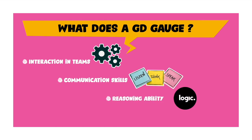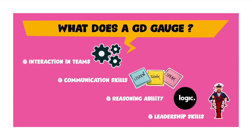The third thing a GD gauges is how logical a person you are. It is not enough to make sweeping statements in a group discussion — you should be able to support your statement with concrete evidence in terms of facts, figures, and things like that. The fourth thing a GD gauges is your leadership skills. A leader is interested not only in doing well for himself or herself, but is also very concerned about the overall performance of the team. There are many ways in which you can display leadership skills in a group discussion, and I will be taking up this topic in one of the other videos.